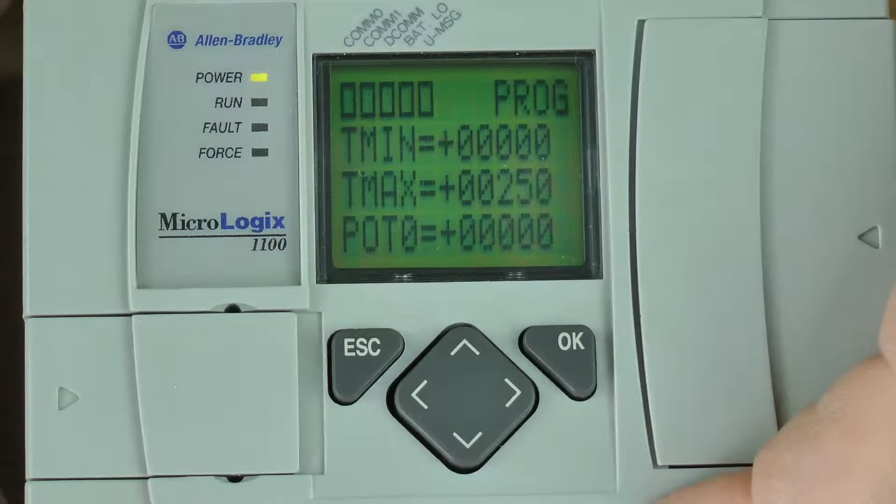Here on this screen, we can see the trim pot minimum for this pot is zero, the trim pot max is 250, and the current value of pot zero is zero.